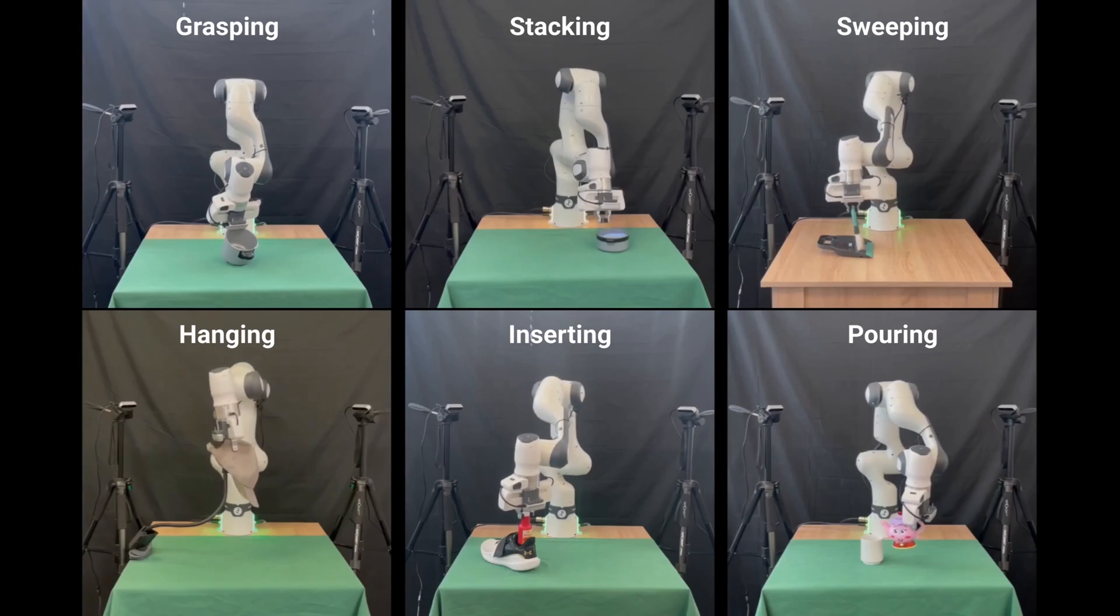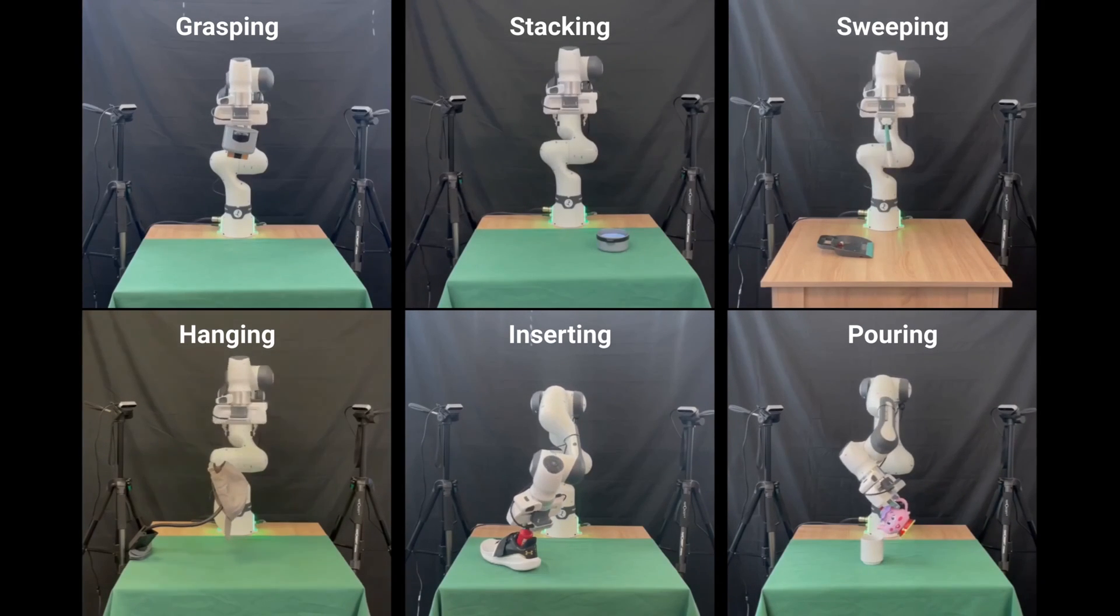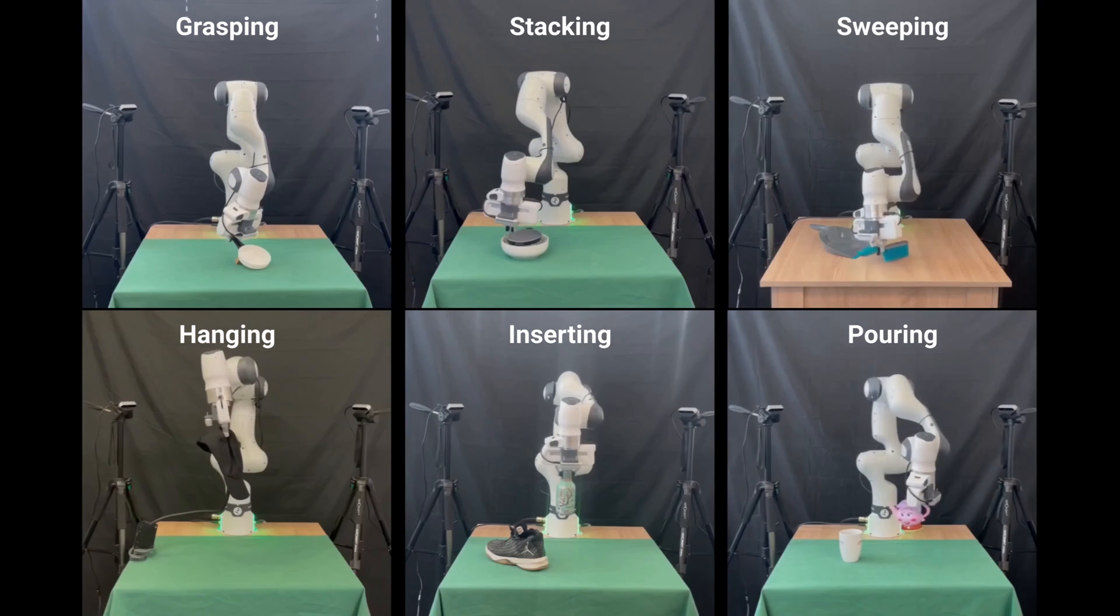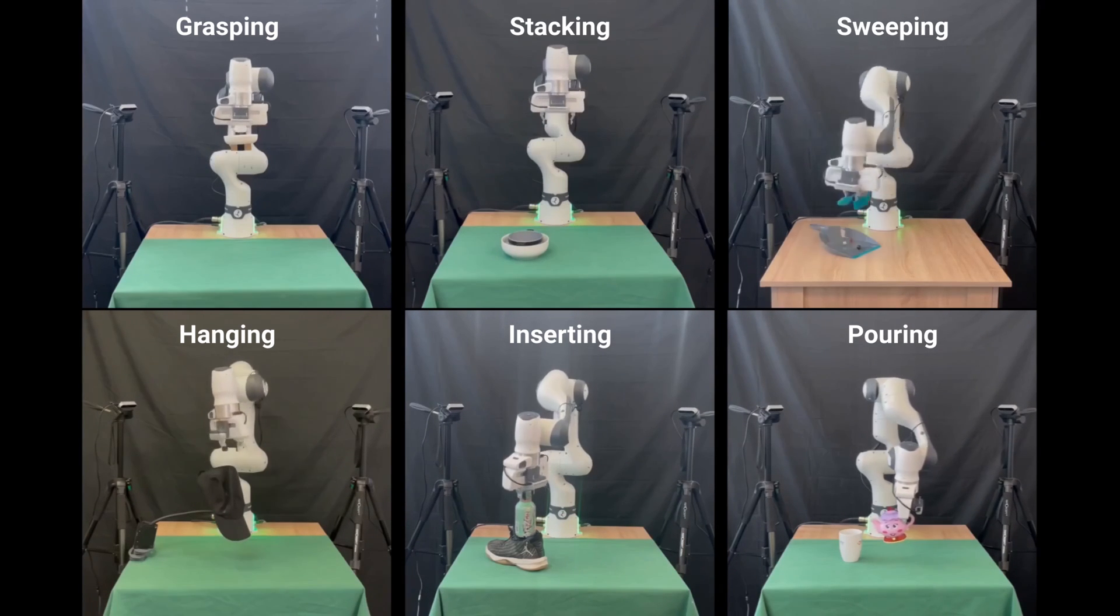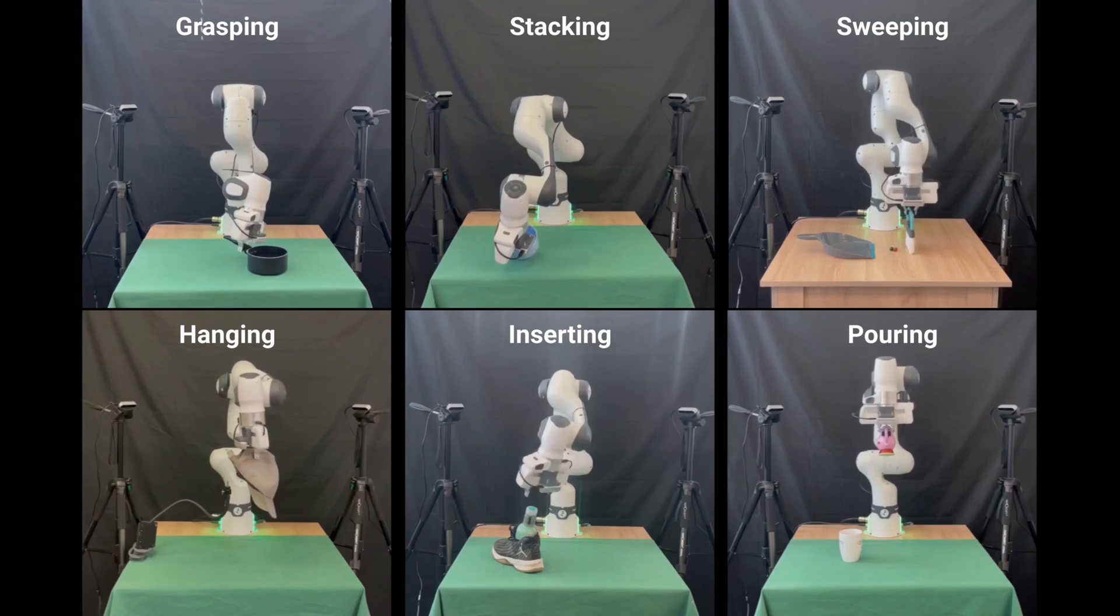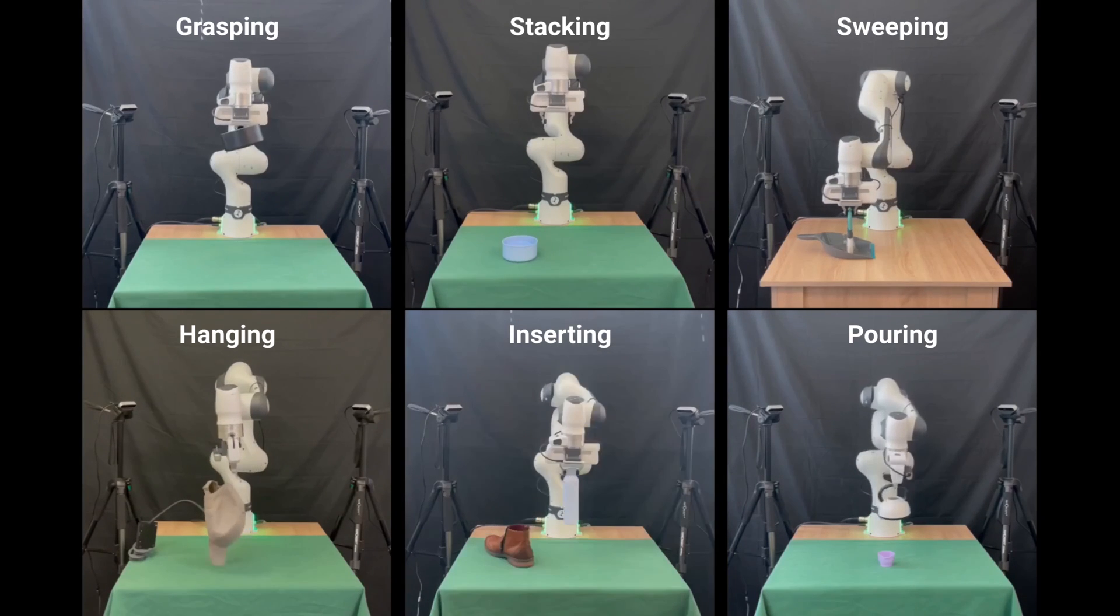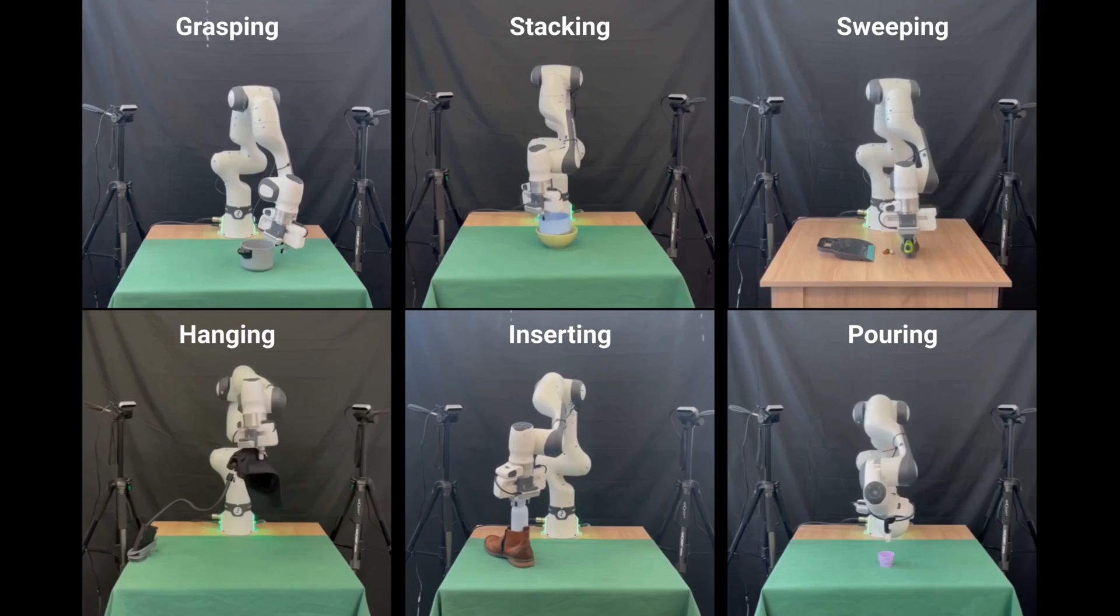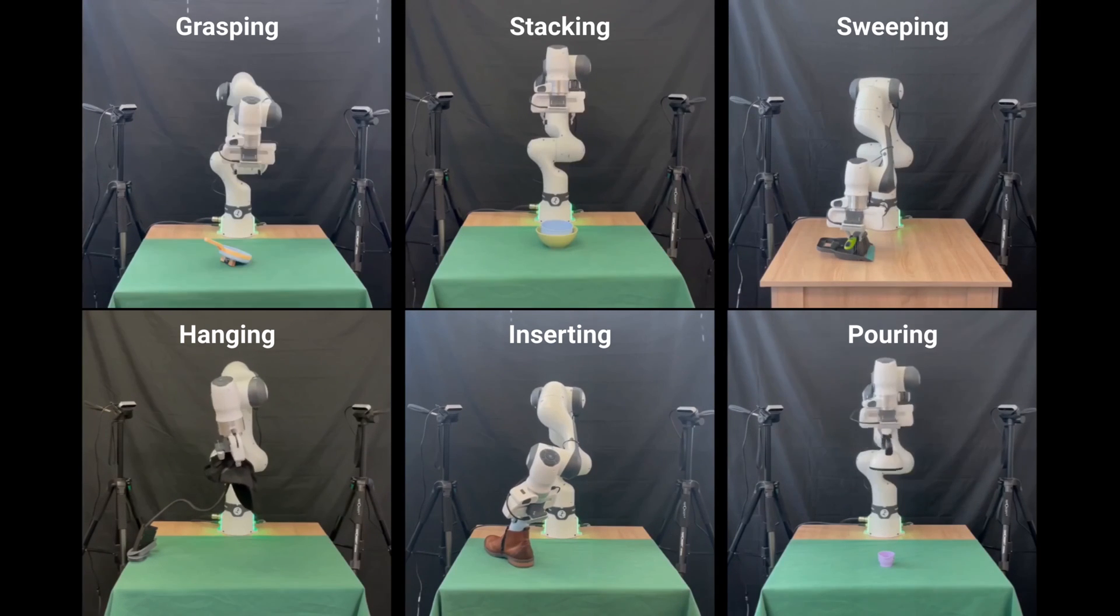By knowing how to align novel objects in a way that is consistent with the demonstrations, we are able to complete everyday robotic tasks such as grasping, stacking, sweeping, hanging, inserting, or pouring from just a handful of demonstrations and complete these tasks immediately after those demonstrations without the need for any additional training.